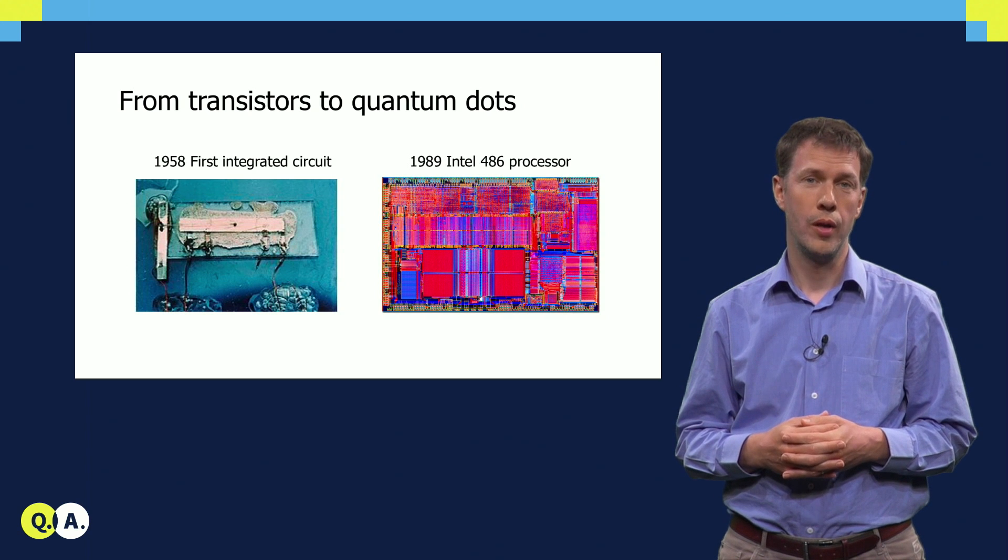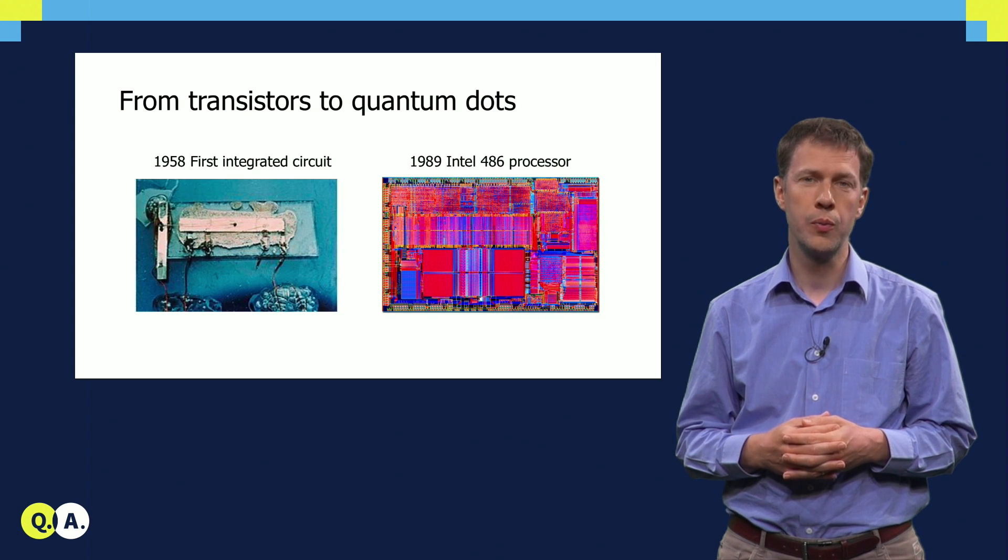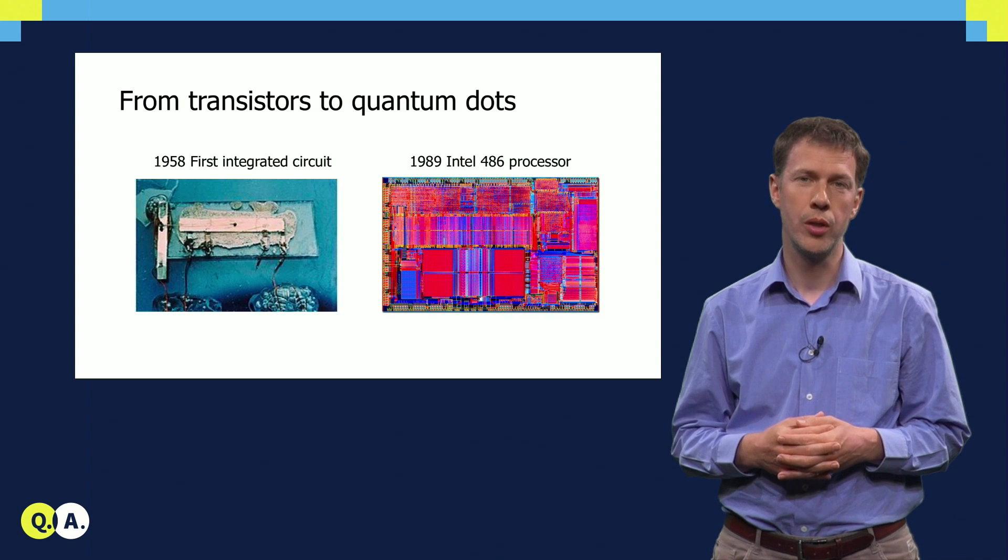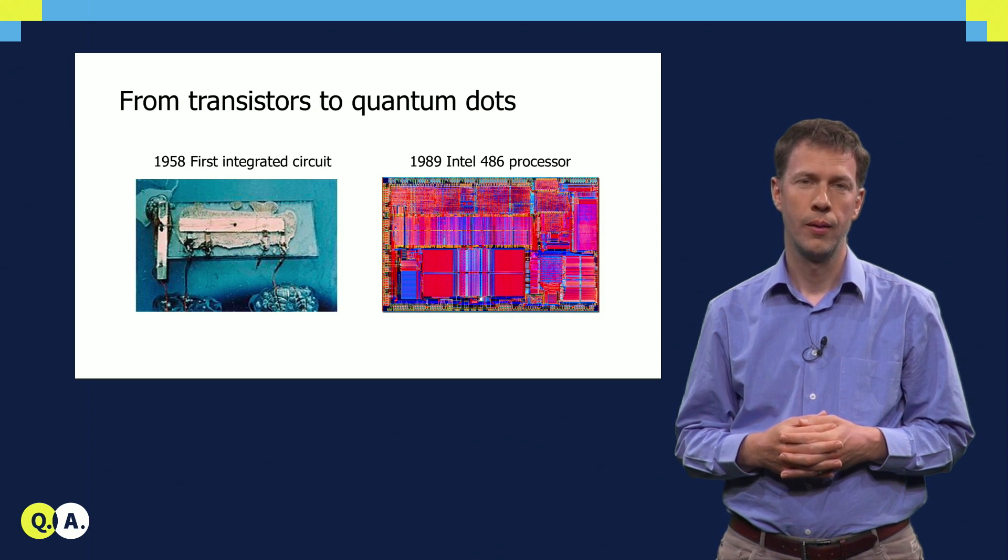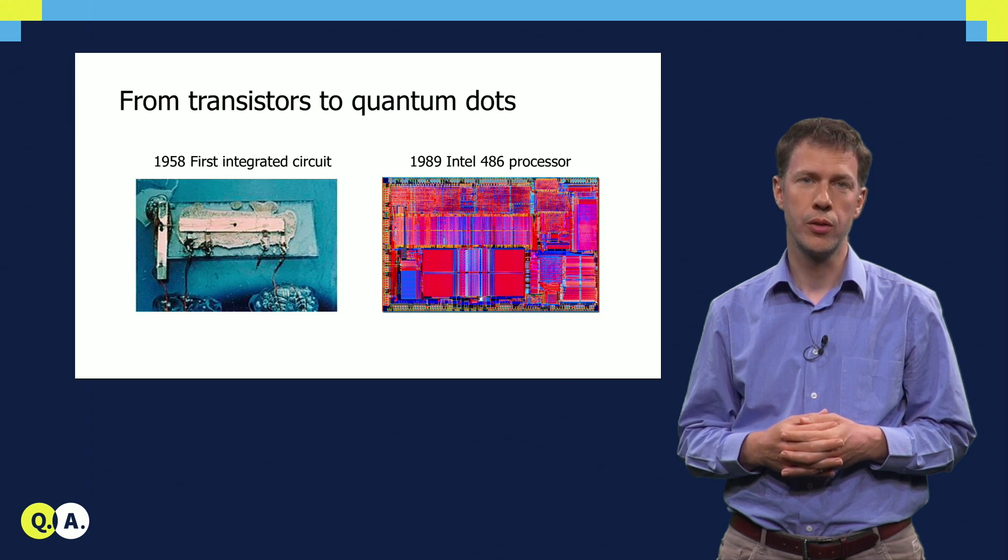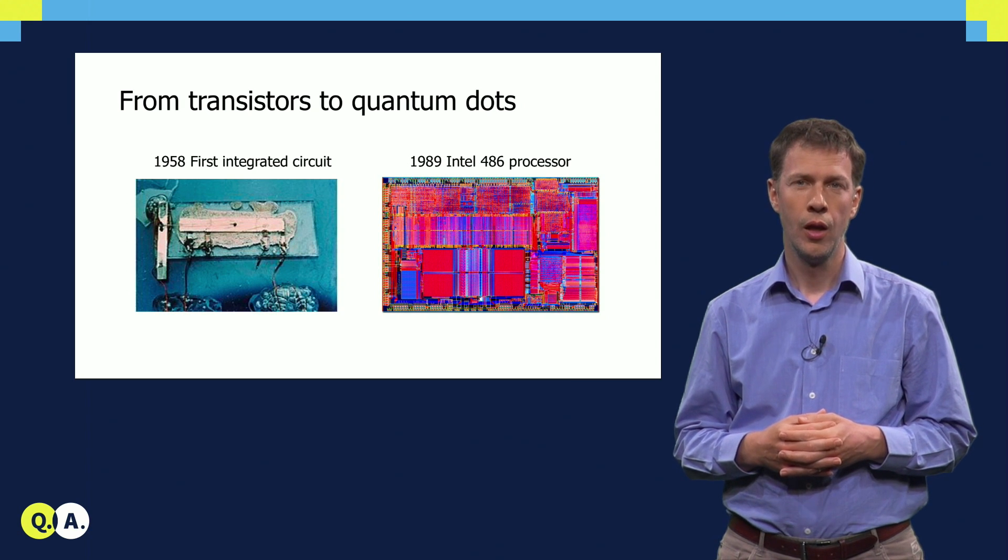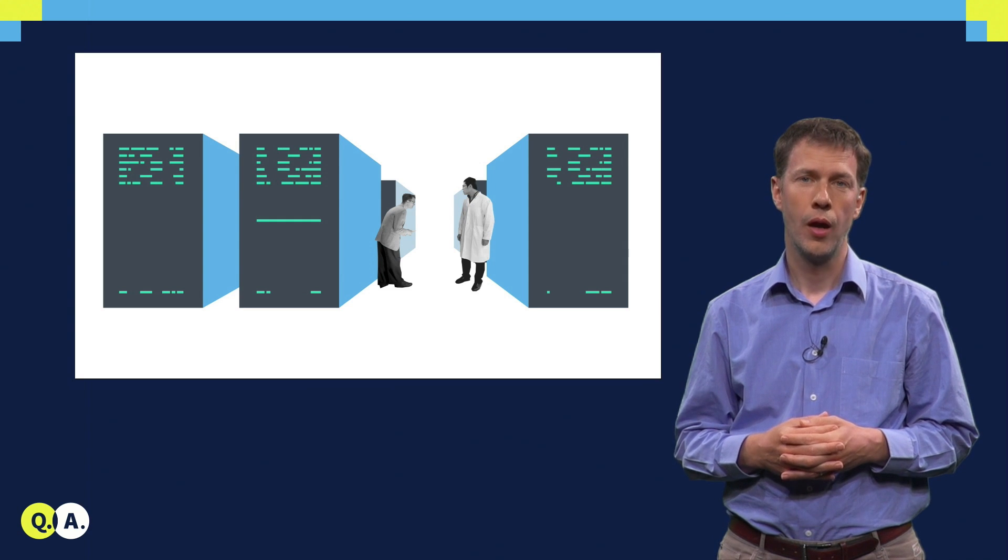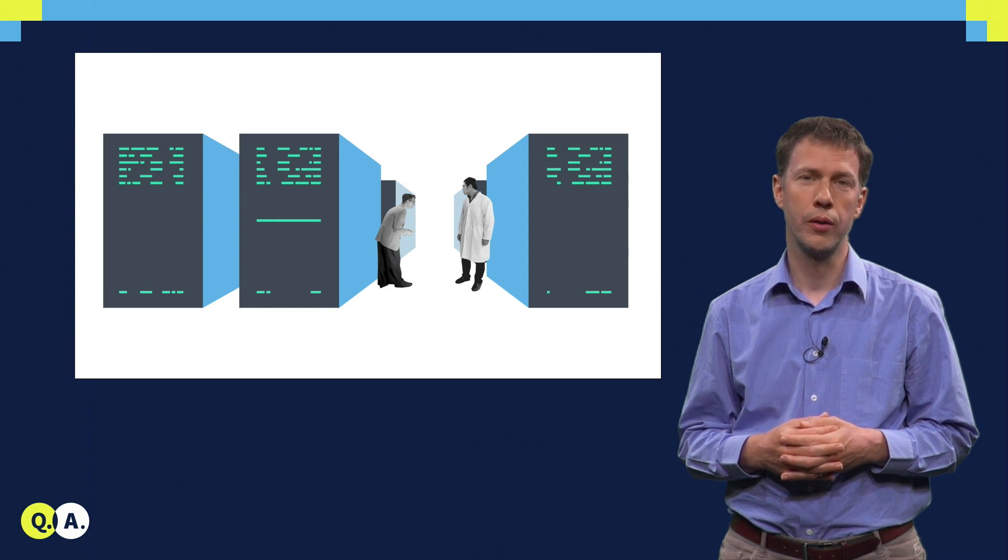And that's led to the remarkably powerful and complex processors that we use in computers and memory chips today. Now, based on this very same core technology of transistors and integrated circuits, we have found in the last decades how to build some of the highest quality quantum bits.